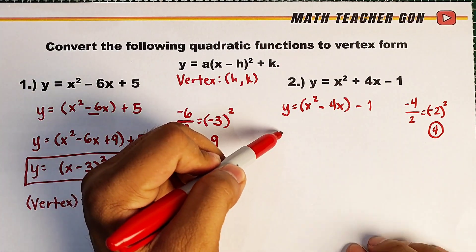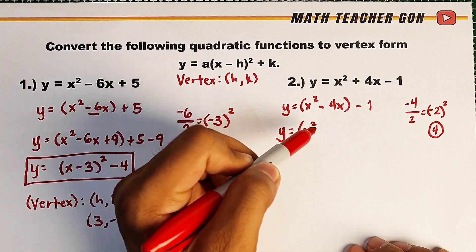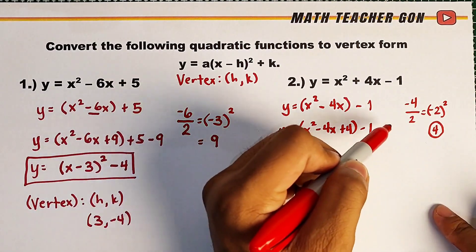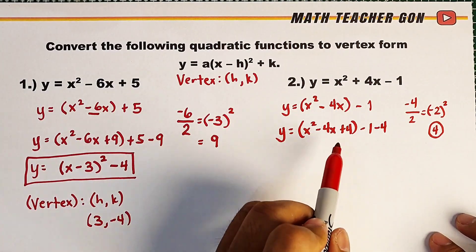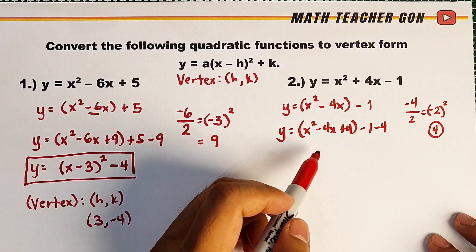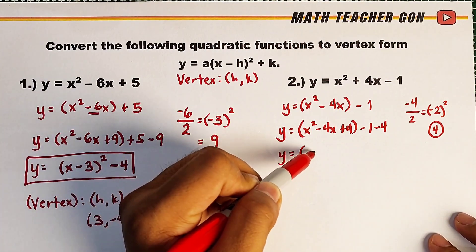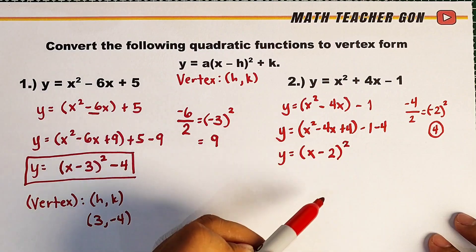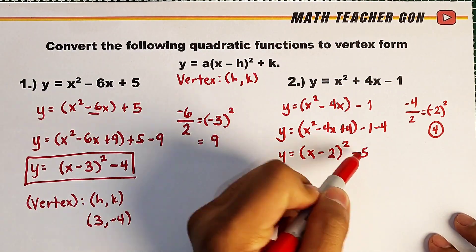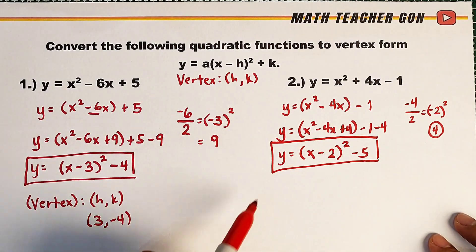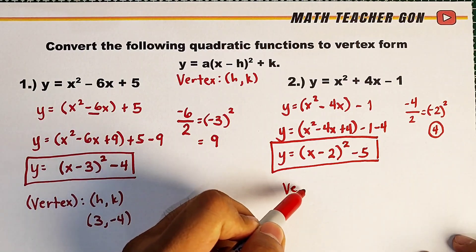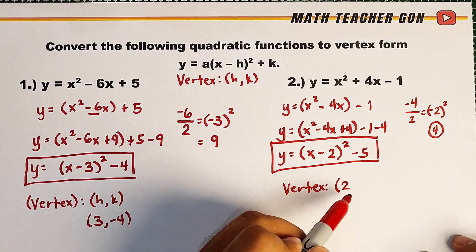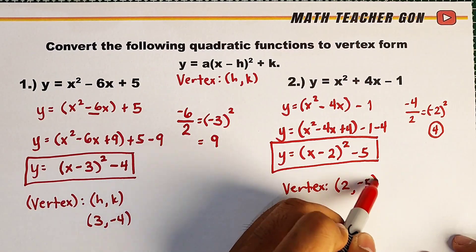So it becomes y is equal to x squared minus 4x plus 4 minus 1. Since we added 4 to complete the square, we subtract 4 as well. This is already a perfect square trinomial, so we express it as a square binomial: y is equal to the quantity x minus 2 squared. Then negative 1 minus 4 is negative 5. This is the vertex form. As for the vertex, since this is negative 2 we write positive 2, and the value of k is negative 5.